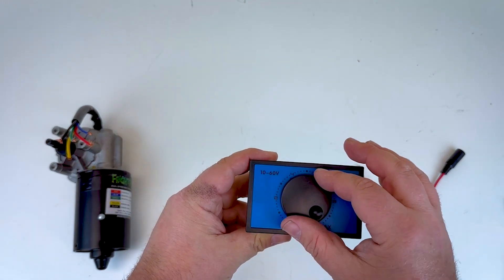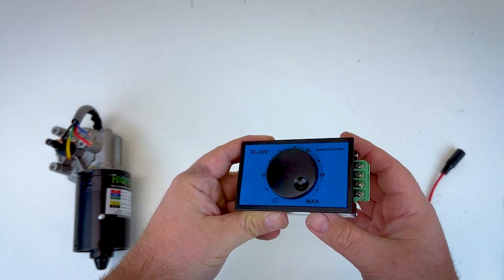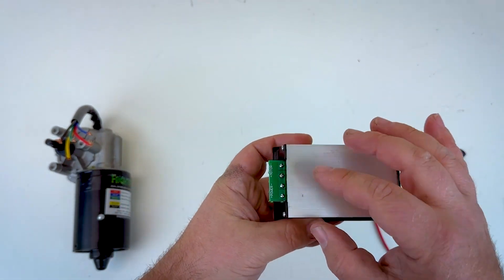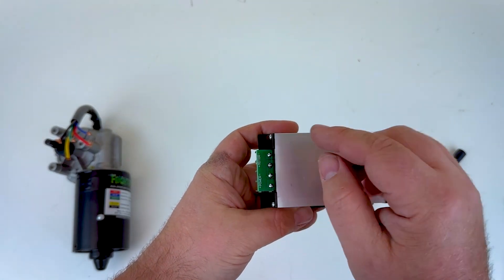The speed controller has a dial here that allows you to set the speed from off all the way up to the maximum speed of the motor. There are screw terminals here for wiring in the motor and those are labeled here on the back side. So you have your power plus, power negative, motor plus, and motor negative.